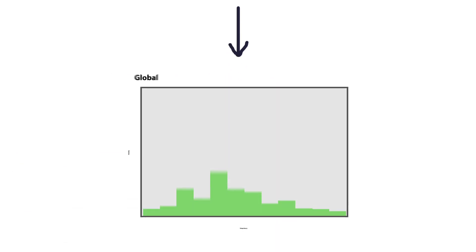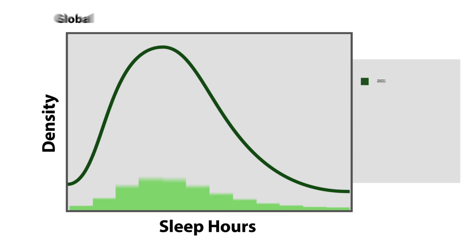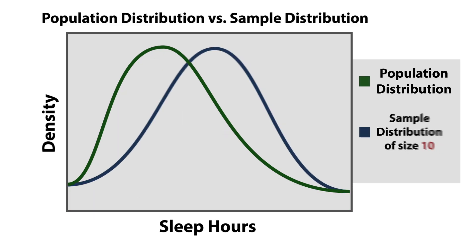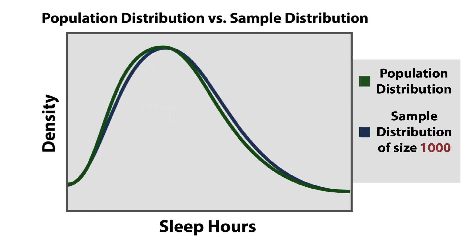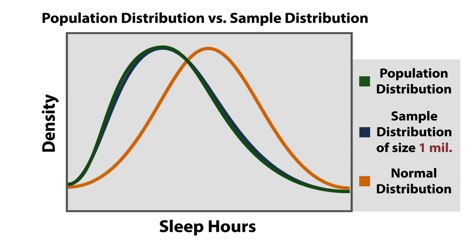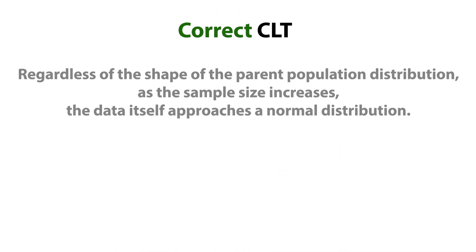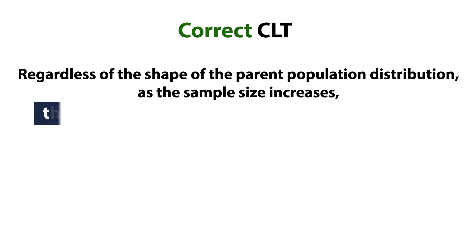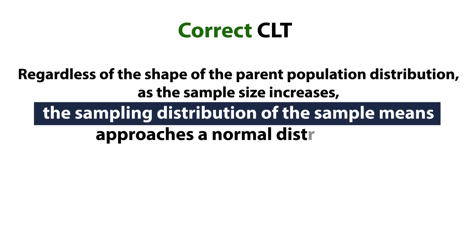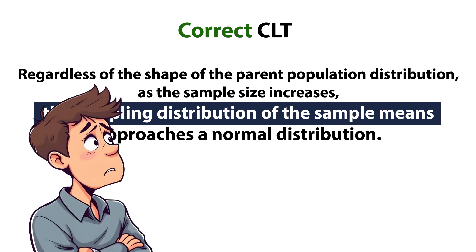If the population of the average sleep hours is a right-skewed distribution, as you increase the sample size, the data will get closer and closer to the population distribution. What central limit theorem actually says is that, regardless of the shape of the parent population distribution, as the sample size increases, the sampling distribution of the sample means approaches a normal distribution. It's a bit complicated, I know. Let's break it down.